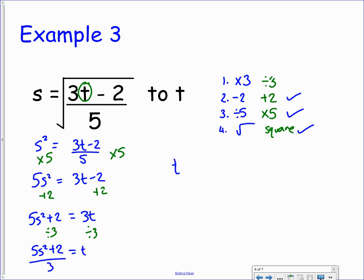Again, we can flip that round to get t on the left. So t equals 5s squared plus 2 all over 3. And you can clearly see that t is now the subject of that formula.